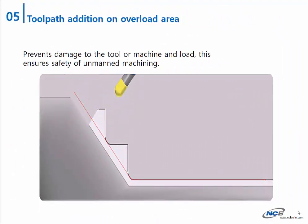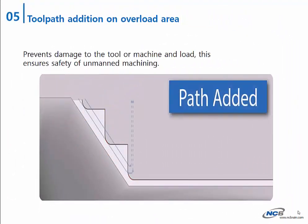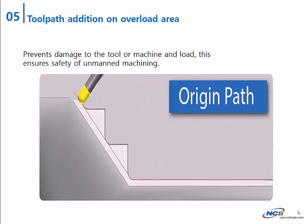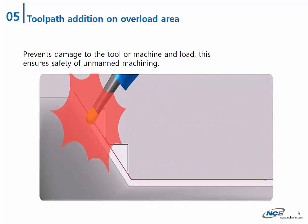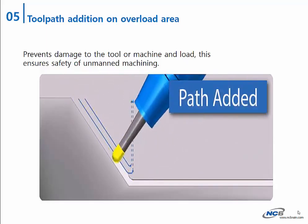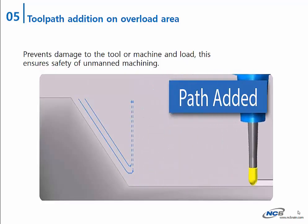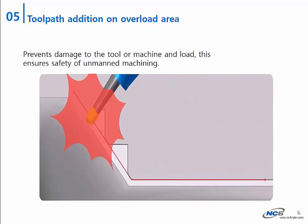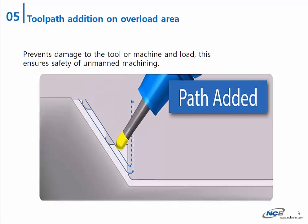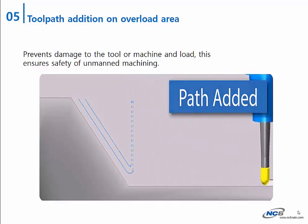Second, tool breakage is likely to happen on overload areas. Automatic toolpath addition on overload areas will prevent tool breakage and help safer NC machining. Even unmanned machining with various ATC will make safer machining without tool breakage. The big stress of making perfect CAM data will be gone.